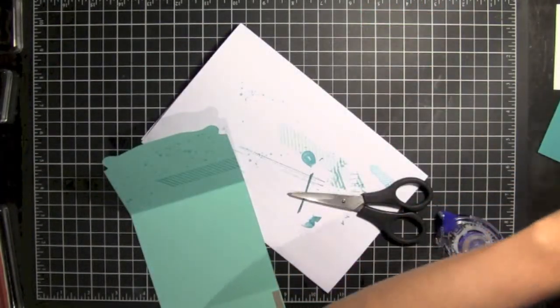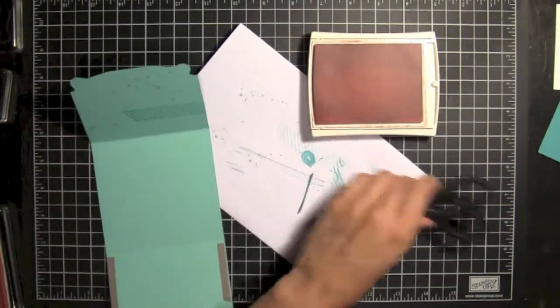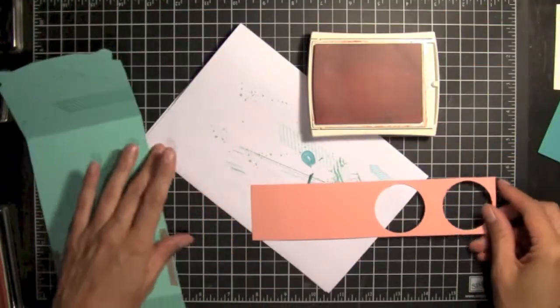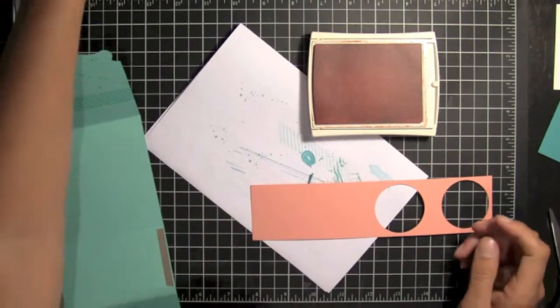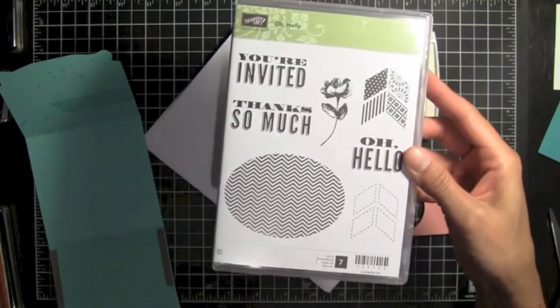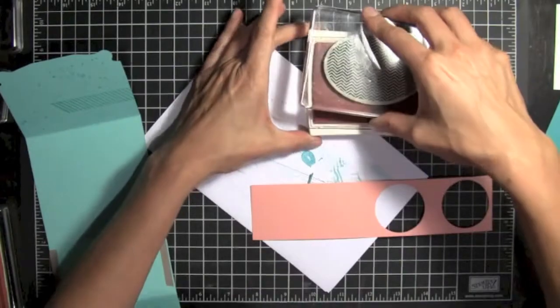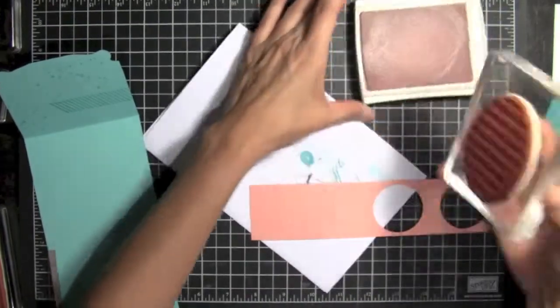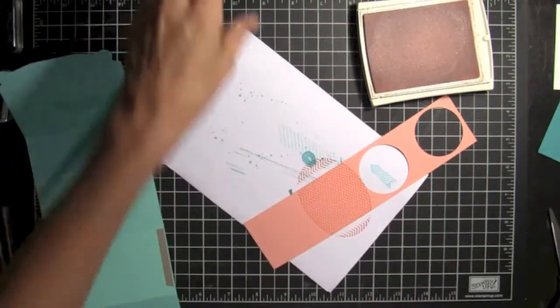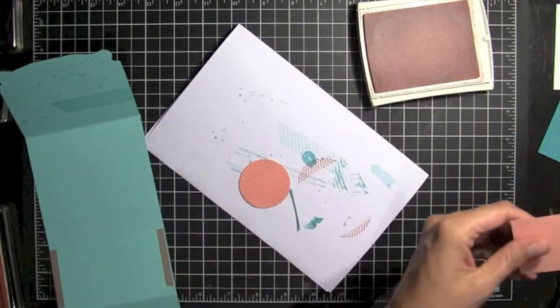Next, we're going to do a little element for the top of the piece. We're going to use some crisp cantaloupe. And we're going to use the Chevron Oval. And this is from the Oh Hello stamp set. Really cute, really fun. And Chevron is really popular right now. So we're just going to stamp that in crisp cantaloupe on crisp cantaloupe. And we're going to use the 1 3⁄4 circle punch to punch that out.